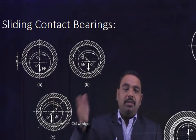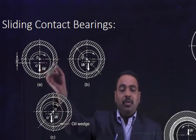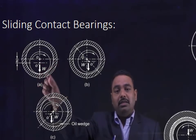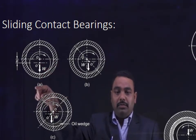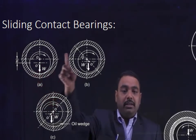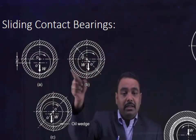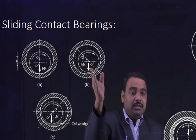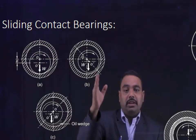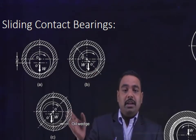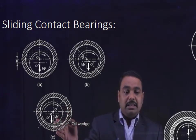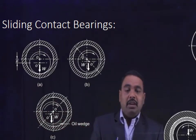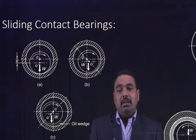Here you can see three diagrams. Diagram A shows when the shaft is in stationary condition — at that time, the journal will be resting at the bottom. When it starts rotating in the clockwise direction, the journal will slightly move. This is the situation when the journal is just starting to rotate. When it is in equilibrium, the position will be like shown, where this side is called the leading edge and the other side is called the trailing edge.